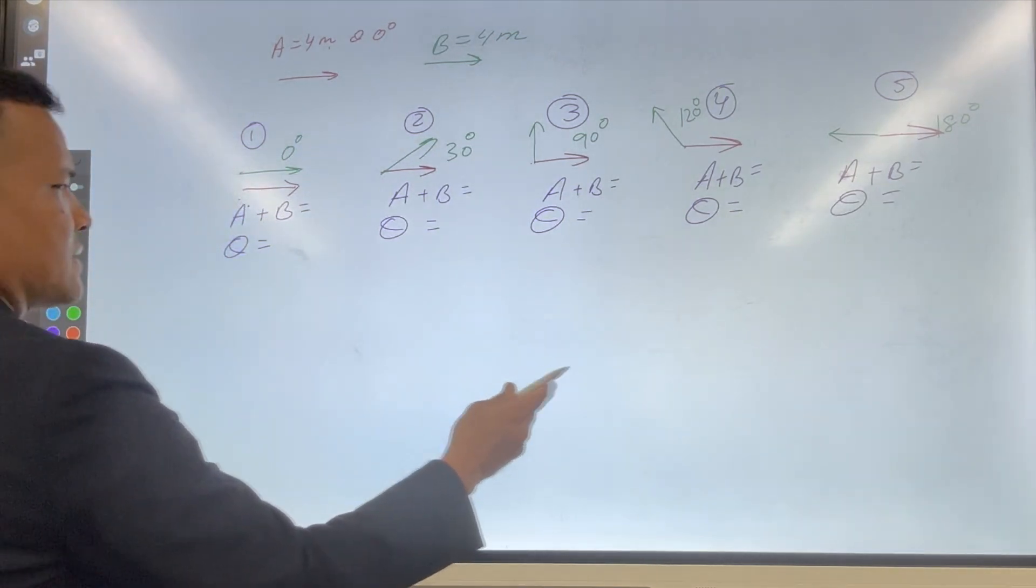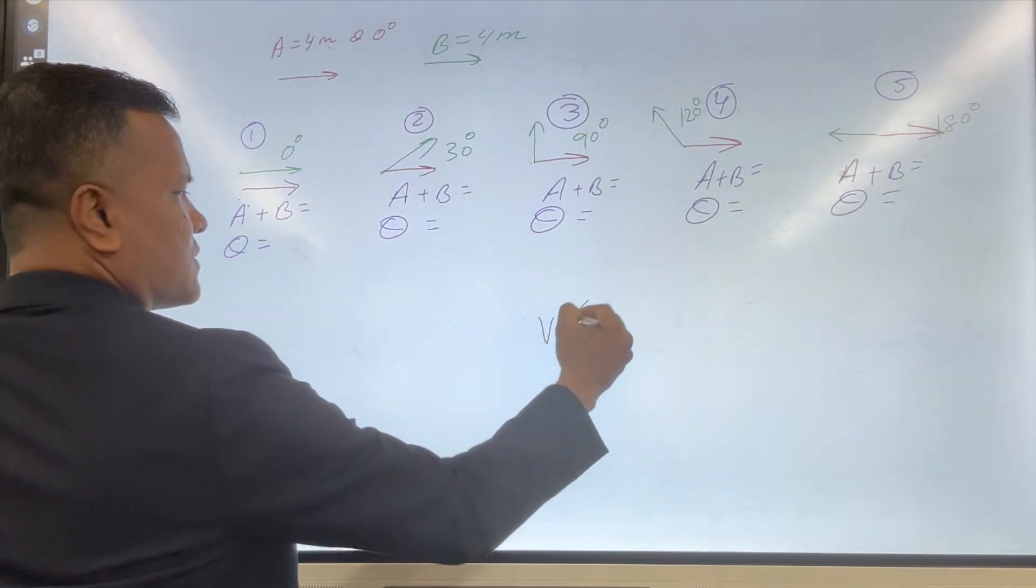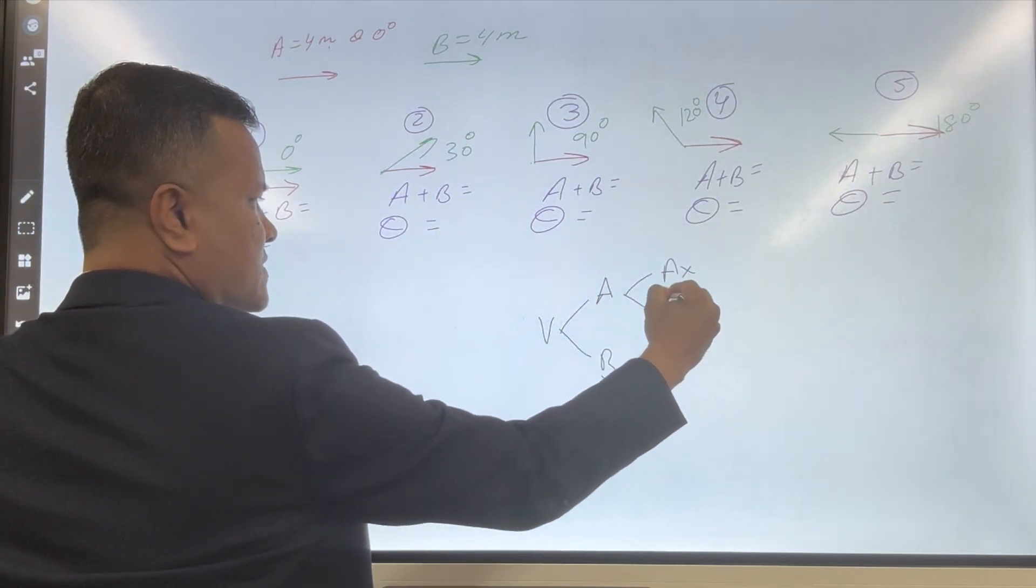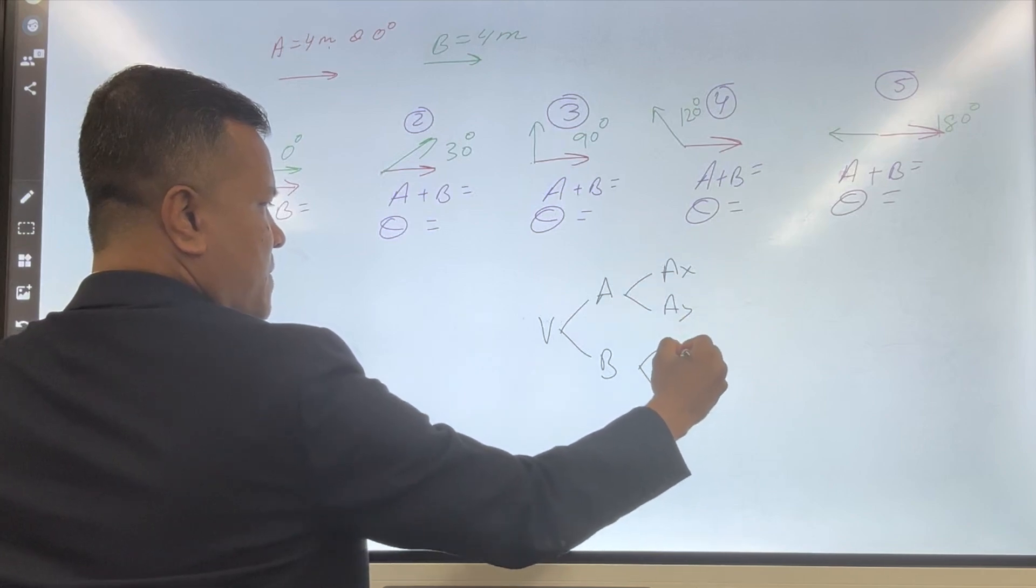Okay, so let's start with the first one. Now vector, we have vector. It has two components: ax, a1, bx, and b1.